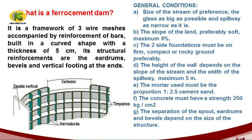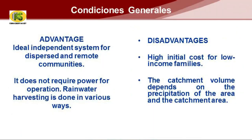The mortar which is used should be at the ratio of 1:2:5 — cement to sand. The strength of the concrete should be 250 kgs per centimeter square. The separation of the spillway, drums, and brackets depend on the size of the structure. It's an ideal system for communities who are far away and dispersed. One doesn't require energy for the operation of the system. The collection of rainwater is made in different manners and in different ways.